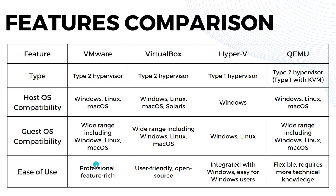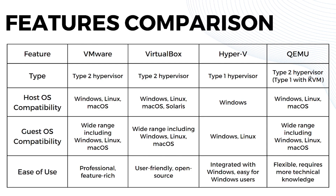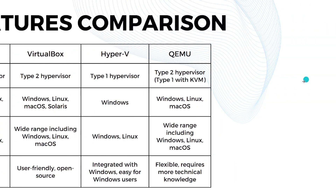When it comes to ease of use, VMware is professional and feature-rich. VirtualBox is user-friendly and open source. Hyper-V is integrated with Windows, making it easy for Windows users. QEMU is flexible but requires more technical knowledge.